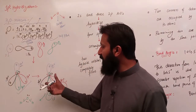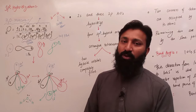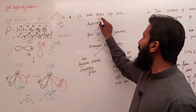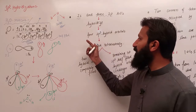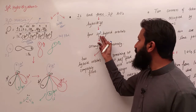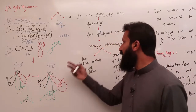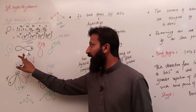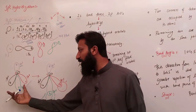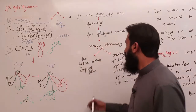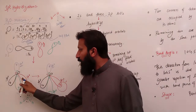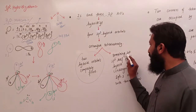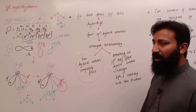अब हम इस example को points की form में describe करें तो हम यह कह सकते हैं कि in oxygen atom, 2S and 3P atomic orbitals hybridize with each other and form 4 SP3 hybrid orbitals arranged in a tetrahedral geometry। Hybridization के बाद बनने वाले इन SP3 hybrid orbitals में 2 hybrid orbitals lone pairs present करते हैं।